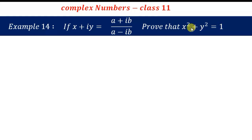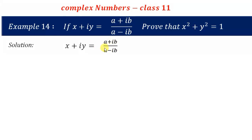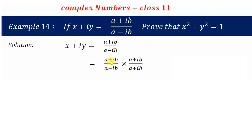We'll try to get the values of x and y from this complex number. We take (a + ib)/(a - ib) and rationalize the denominator — multiply by (a + ib)/(a + ib).